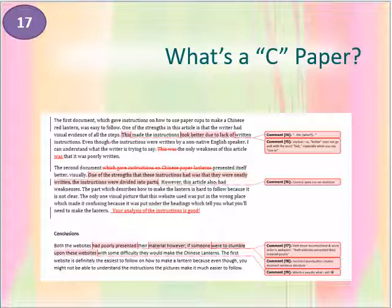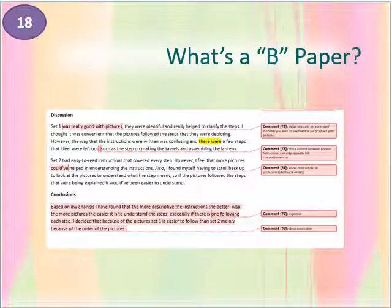A B paper can be described as adequate for professional readers, but it needs improvement. A B paper includes all of the content required by the assignment and is well developed logically — a reader would not have to struggle to figure out what the writer intends. The document follows correct formatting. It could contain one incorrect sentence structure such as a run-on or fragment, but it varies its sentence structure to include not only simple but occasional compound and complex sentences. It could contain one or two incorrect word choices, spelling errors or typos, or a combination of these. On the screen is a sample of three paragraphs from a B paper, also an analysis of two sets of instructions.